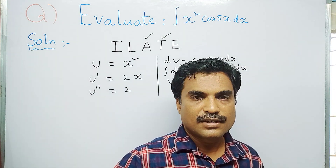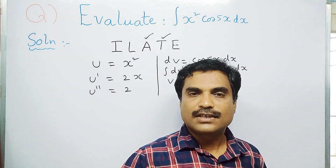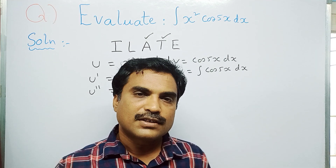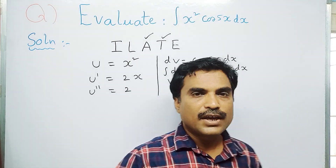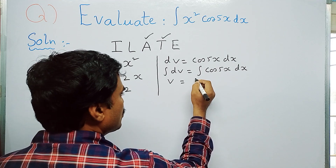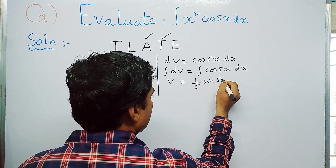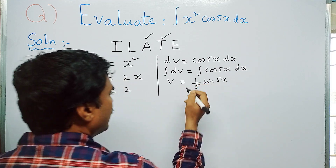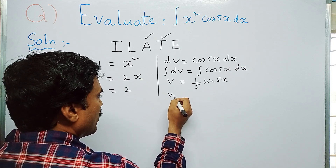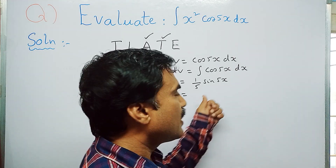Using the formula ∫cos(ax) dx = (1/a)sin(ax), with a = 5, we get v = (1/5)sin 5x.